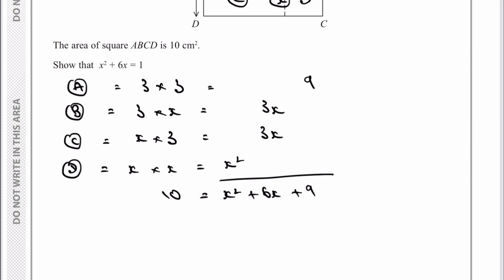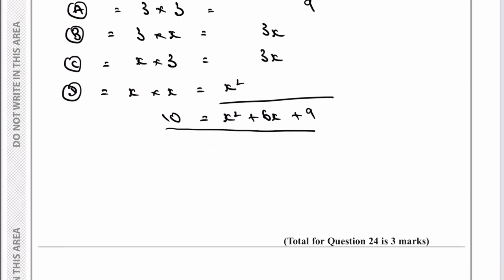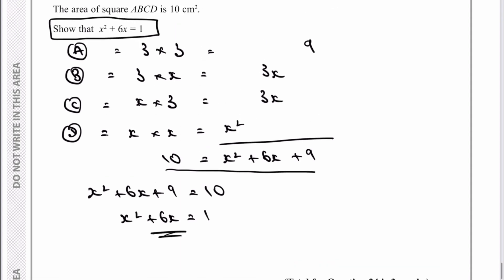Now when I add up all of those, the way I've written it allows me to add them up as x squared plus 6x plus 9. And mustn't forget, that's going to equal an area of 10, because that's what it says. So therefore, we've got to manipulate this to make it look like this. If I just write that out, x squared plus 6x plus 9 equals 10. Then really all I do is take 9 from both sides and I can write that as x squared plus 6x equals 1, which is the show that they've wanted from the question.